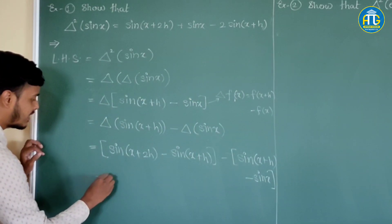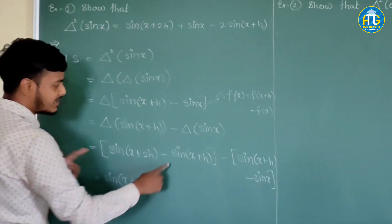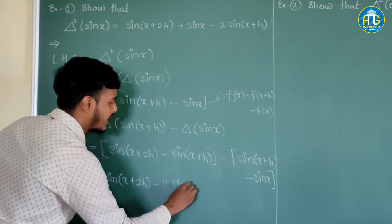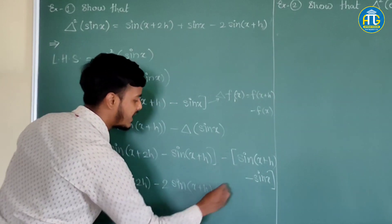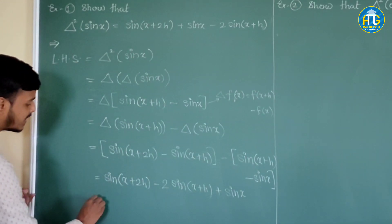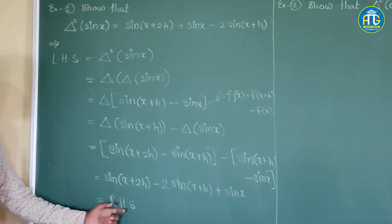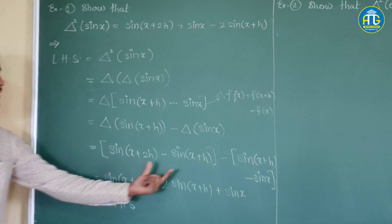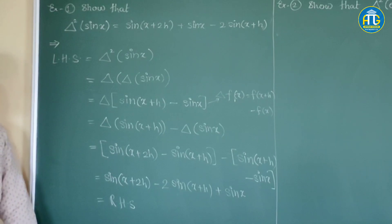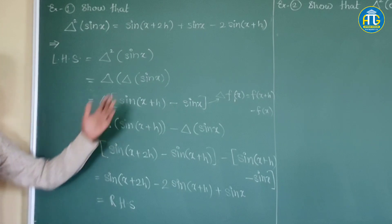So we can write this as sin(x+2h) − 2sin(x+h) + sin(x), which is nothing but your RHS. If you are not immediately seeing the RHS, write sin(x+2h) first, then add sin(x), and then write −2sin(x+h). So this first problem is clear — we can move on to the next problem.